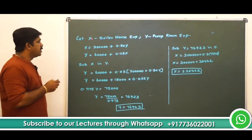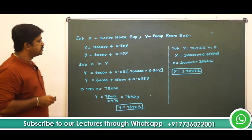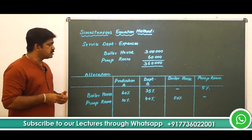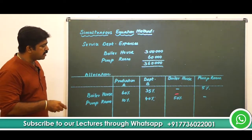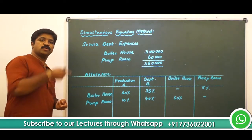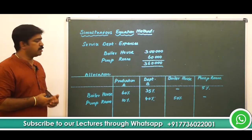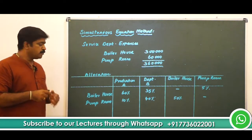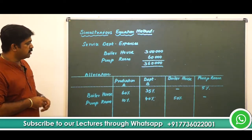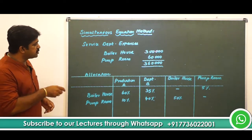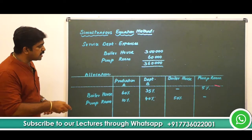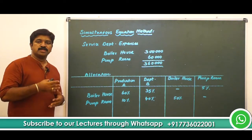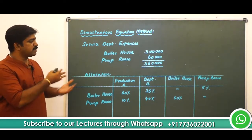We start with an assumption: let x be the boiler house expense. Although boiler house expenses are 3 lakhs, that is not final, because 50% of pump room expenses are attributable to boiler house. So we cannot directly say the pump room contribution is 60,000 × 50% = 30,000, nor can we directly say boiler house expenses are 3 lakh × 5%.